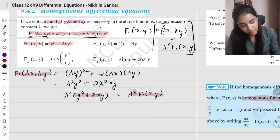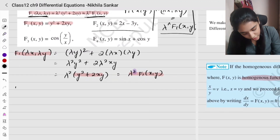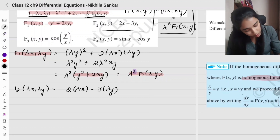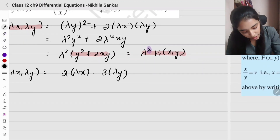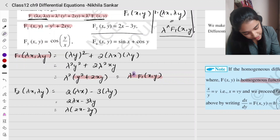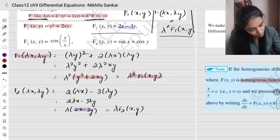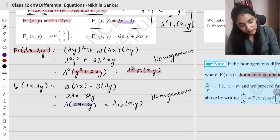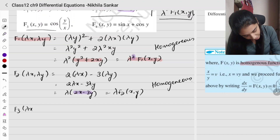Second example: f2(x, y) = 2x - 3y. Substituting lambda x and lambda y gives 2(lambda x) - 3(lambda y) = lambda(2x - 3y) = lambda · f2(x, y). So this is also homogeneous, of degree 1.